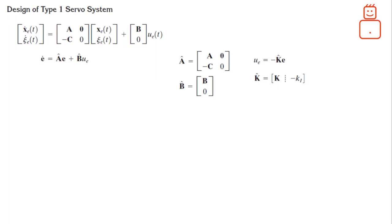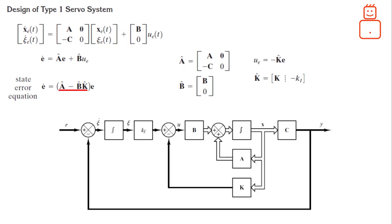So, if we want to write the state error equation, we can simply substitute the new formula of the control law in the equation of the E dot and obtain the following closed loop state matrix. Now, we can state the following important statement. If the desired eigenvalues of the state matrix are pre-specified, then the state feedback gain matrix capital K and the integral gain constant K sub E can be determined by the pole placement technique.